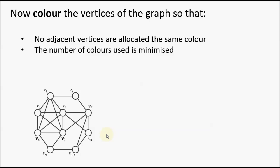Now in the graph coloring problem, what we're looking to do is color the vertices of the graph, so that two criteria are met. First, we want to minimize the number of colors being used. And secondly, the constraints of the problem are that we want to make sure that no adjacent vertices are denoted the same color, or allocated to the same color.